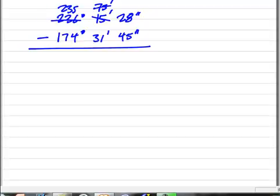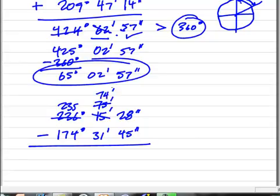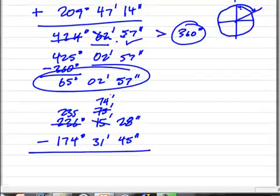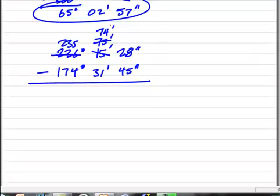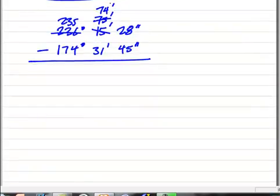But I still need to borrow a minute to enable my seconds to subtract. So I'm going to borrow one more minute—74 minutes—and this now becomes 88 seconds. Why 88? Because I added 60 seconds to my 28 seconds. The 60 seconds came from one minute. All right. So now that I've got that set up it's pretty straightforward.